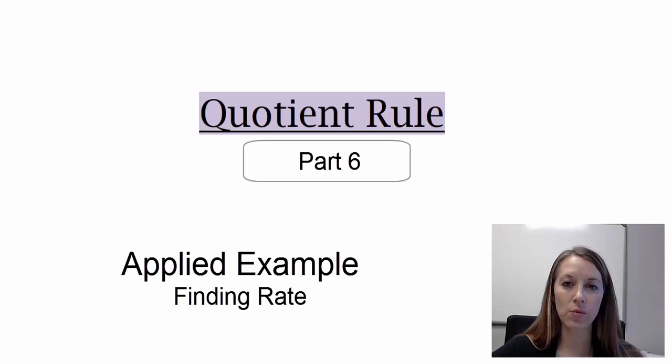We are working through the quotient rule and we've done quite a few examples so far. We have one major example to go through and that is an applied example. So how can we see something like this happen in a real life setting?